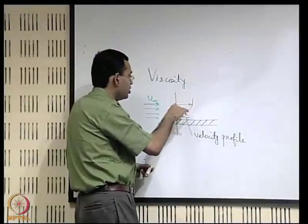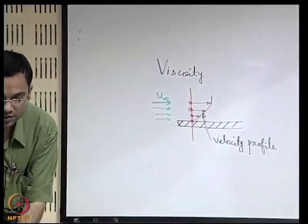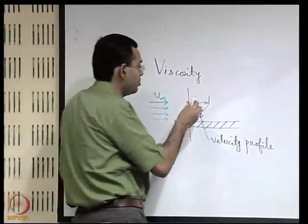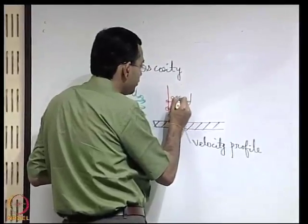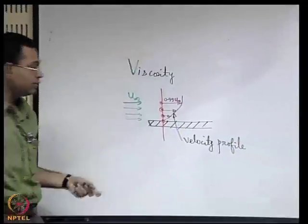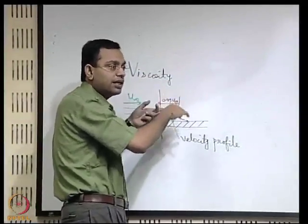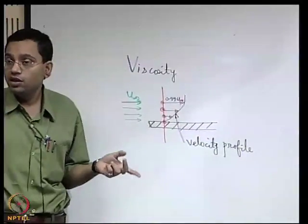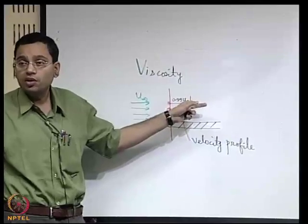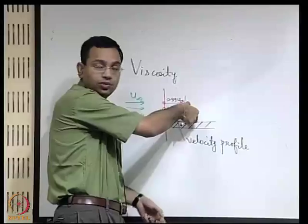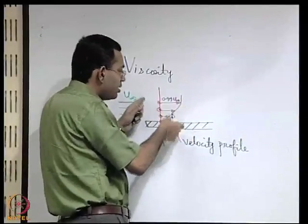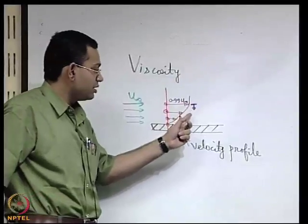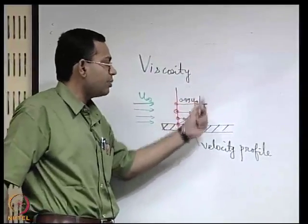The velocity profile reaches a state beyond which there is no significant variation — it has almost reached u-infinity, say 99% of u-infinity. Beyond this point the fluid does not directly feel the effect of the wall. This does not mean the fluid has no viscosity; it has viscosity, but the momentum disturbance could propagate only up to that height. We can demarcate the flow: below the threshold, the fluid adjusts to the momentum disturbance; above it, the fluid does not feel the disturbance.